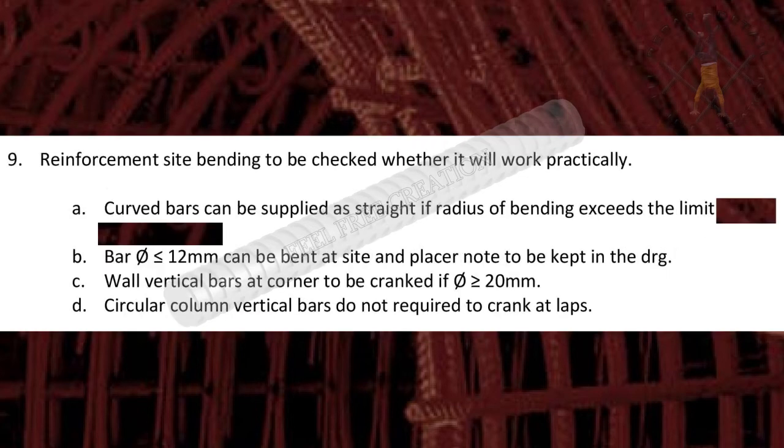Point 9. Reinforcement site bending to be checked whether it will work practically. Curved bars can be supplied as straight if radius of bending exceeds the limit. Bar dia less than or equal to 12 mm can be bent at site and placed, or a note to be kept in the drawing.